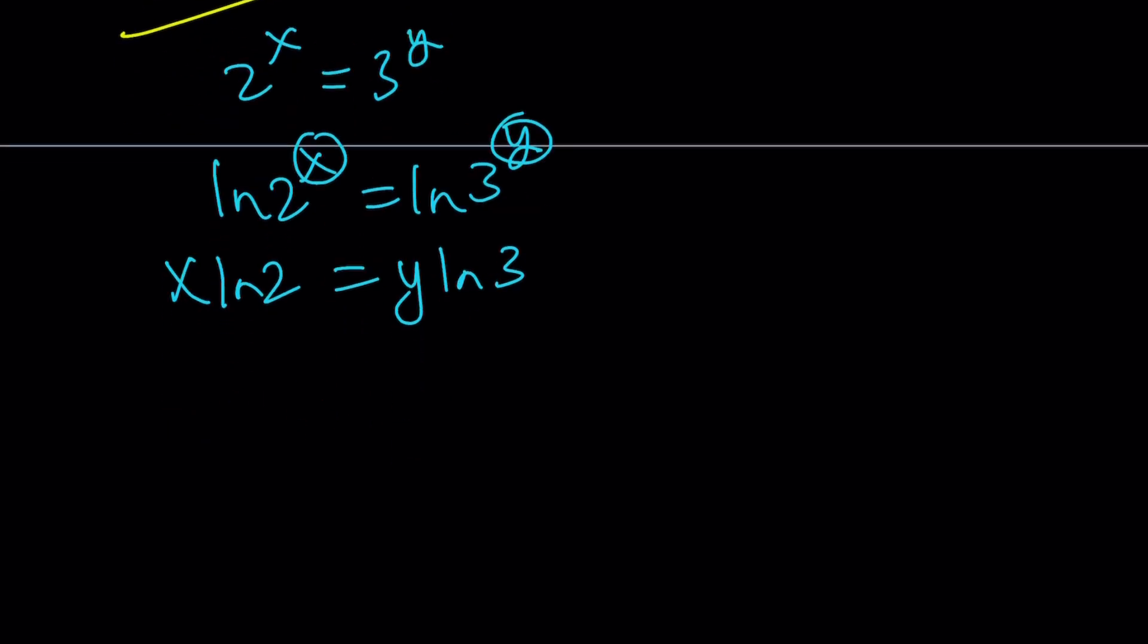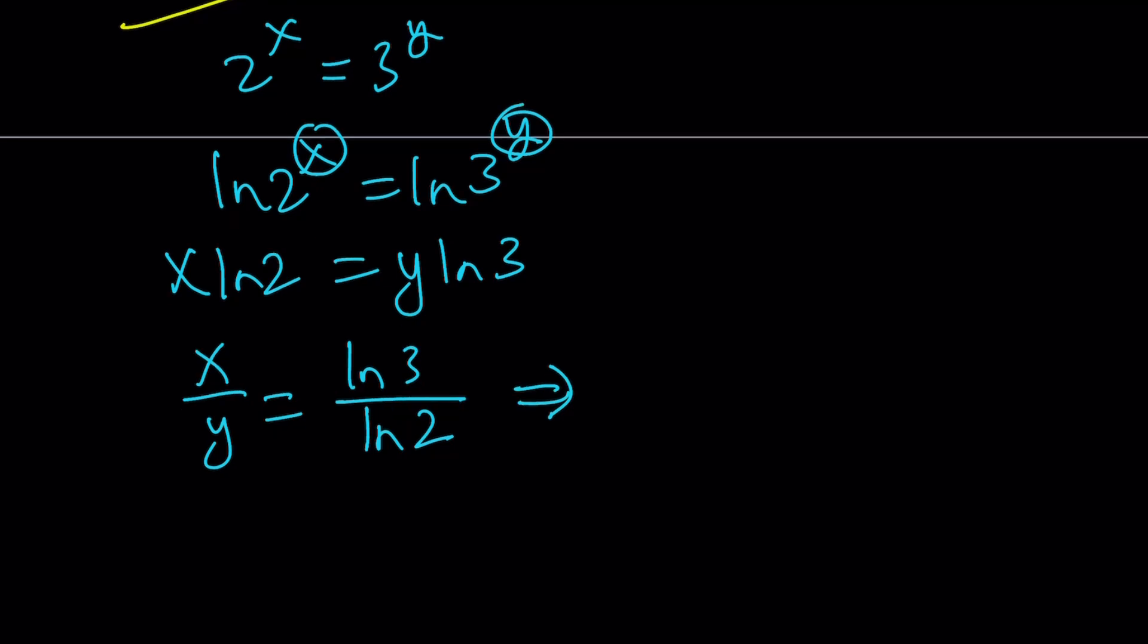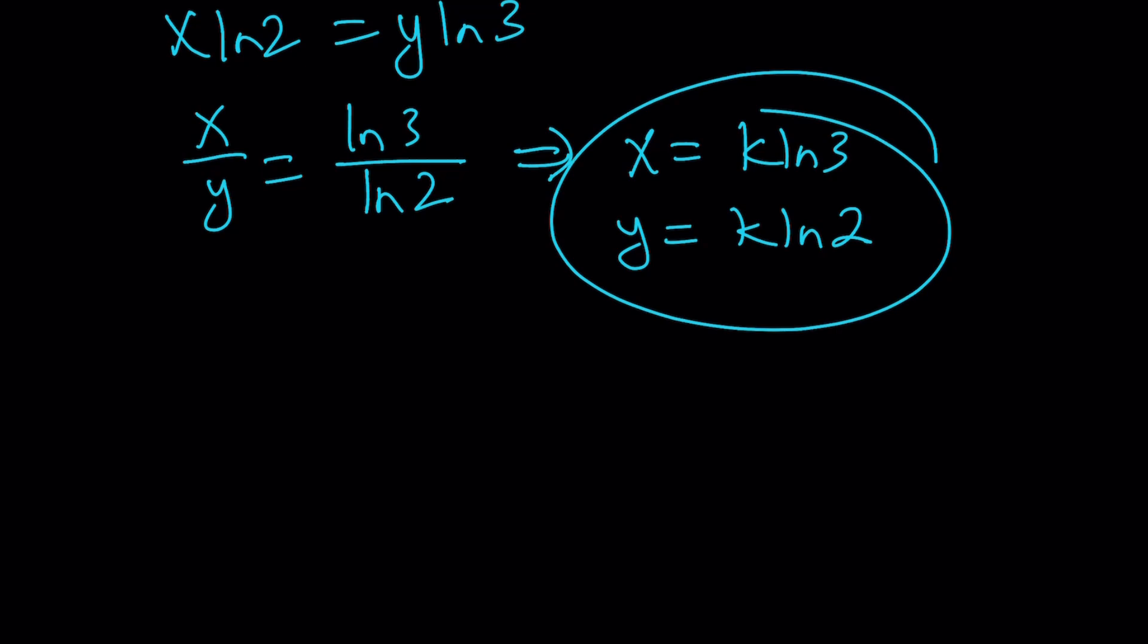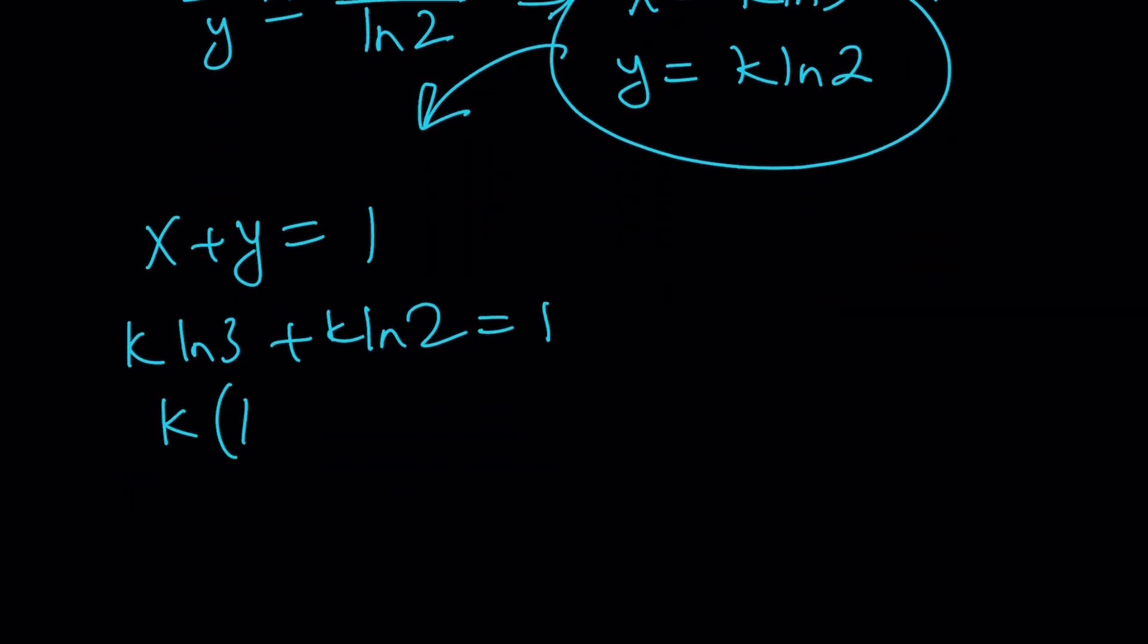And now from here, I'm going to divide both sides by y and ln 2. And then we're going to get a ratio like this one, or proportion. And from here, x is directly proportional with ln 3 and y is directly proportional with ln 2. So I can say x equals k times ln 3 and y equals k times ln 2, where k is a real number which is not 0. And what I can do with this is really cool. Because we know x plus y is equal to 1, I can replace these values. That gives me k ln 3 plus k ln 2 equals 1. And now we can take out the k. k times ln 3 plus ln 2 is equal to 1.